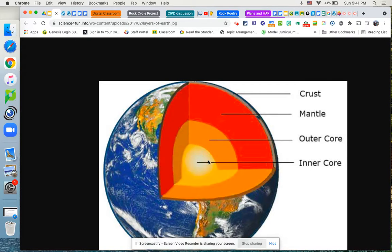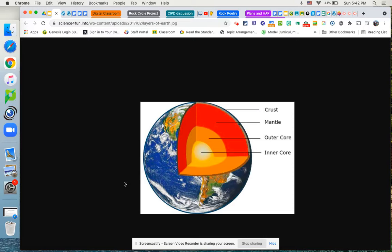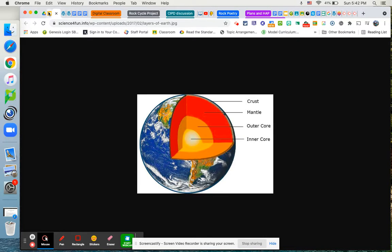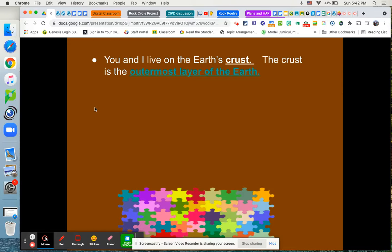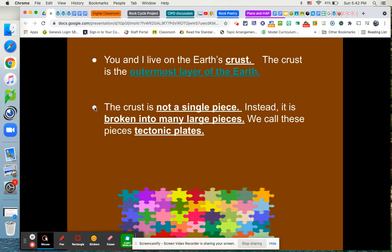But we live on that outermost layer called the crust. So that's going to be important to keep in mind. So continuing, if I go back to the presentation here, we need to keep in mind that the crust of the Earth, it's not a single piece. It seems to be when we look at the globe, when we look at the Earth, that it's kind of one big piece, the crust. But it's really broken into many large pieces that we really can't see. And these large pieces are called tectonic plates.